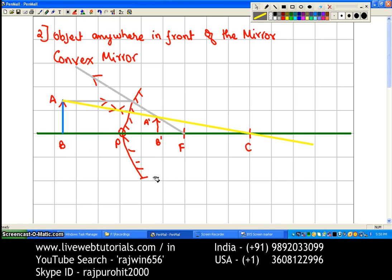Okay, now we will talk about the characteristics of the image. You can see the image is behind the mirror, so its nature is virtual and erect. You can see the size - the size is smaller than the object.